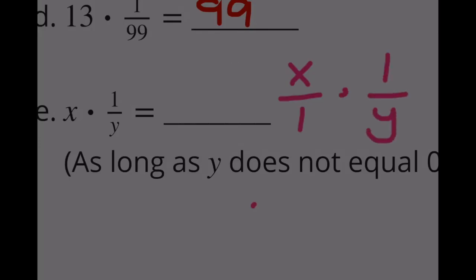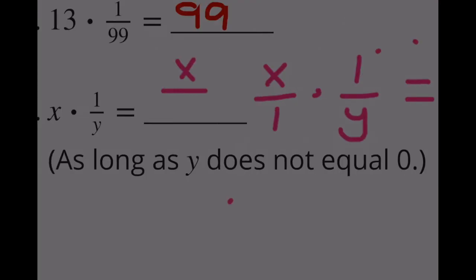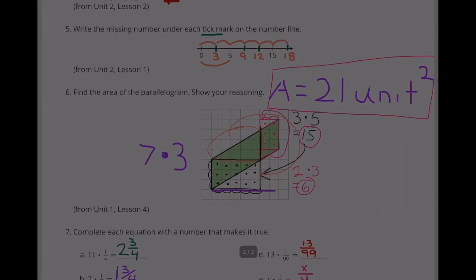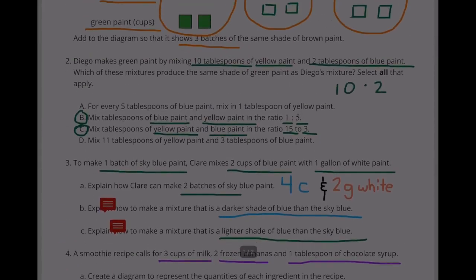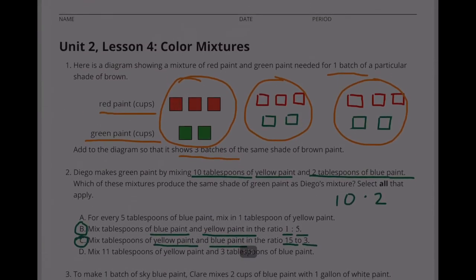Part E: x times 1 over y equals x over y, as long as y does not equal zero. That completes Unit 2, Lesson 4: Color Mixtures.